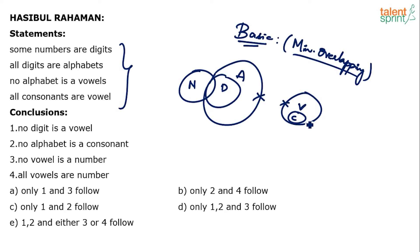Now look at the conclusions. Conclusion 1: no digit is a vowel — this is definitely true because digits are completely encompassed by alphabets, fully inside alphabets. We know alphabets cannot touch vowels, so if vowels cannot touch alphabets, how can they touch something inside alphabets? Conclusion 2: no alphabet is a consonant — same argument. Alphabets cannot touch vowels, and consonants are inside vowels, so alphabets cannot touch consonants. Both are always true in any diagram.